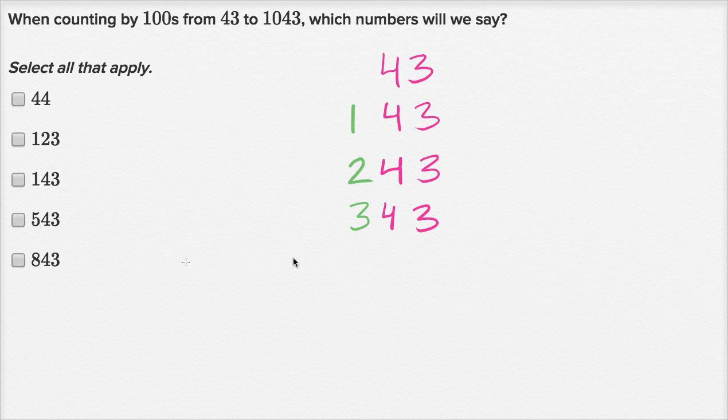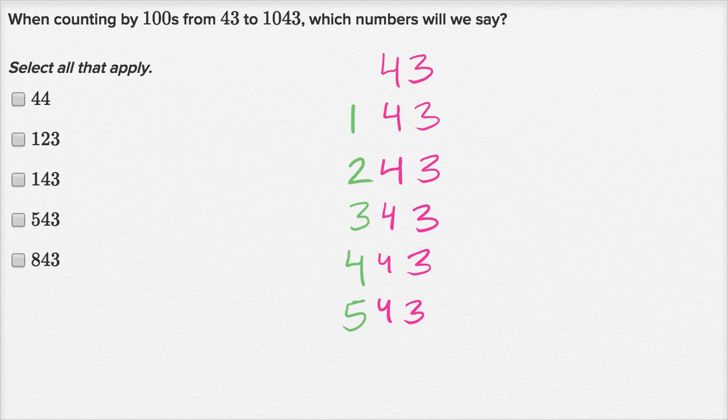I think you see what's going on here. You add a hundred again, you're going to have four hundred and 43. I'm coloring in the hundreds place so that we can keep track of that. You add another 100, you're going to have five hundred and 43.